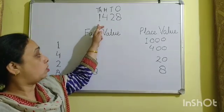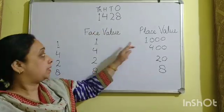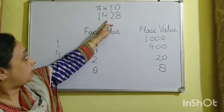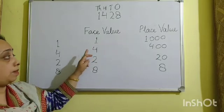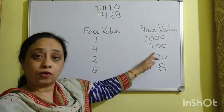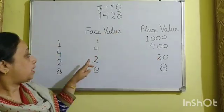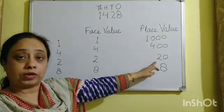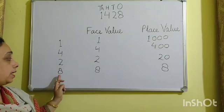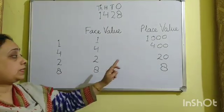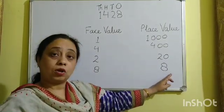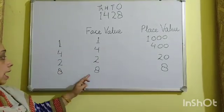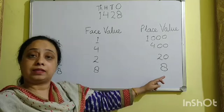To summarize: the place value of 1 is 1000 but the face value is 1. The face value of 4 is 4 but the place value is 400. The face value of 2 is 2 but the place value is 20. The face value of 8 is 8 and the place value is also 8. In the ones position, the place value and the face value are the same.